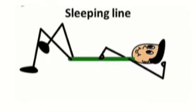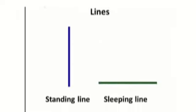Now see, here is the next pattern. This looks as the line is slipping. So children, let us call it a slipping line. This is a slipping line. Let us also say together: standing line and slipping line.